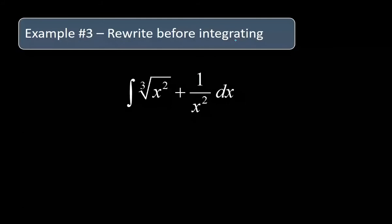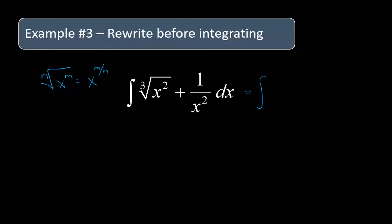Sometimes you have to rewrite before you can integrate. We're going to rewrite so that we have an exponent for each term. If we remember our properties from algebra, the nth root of x to the m is x to the m divided by n — the inside number goes on top, the index goes on the bottom. So this is going to be x to the two thirds. We've got something on the bottom, so we're going to bring that up. Remember that one over x to the n is equal to x to the negative n, so that means this is going to be x to the negative two. Now we have exponents where we can add one and divide by the new power.